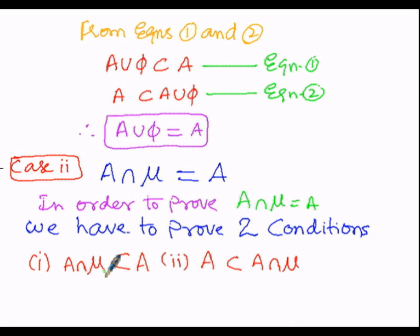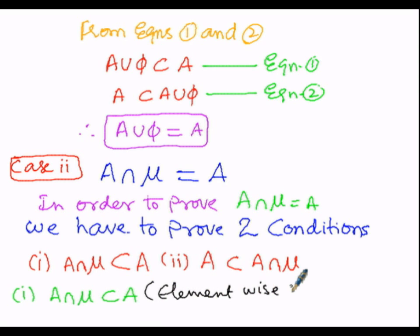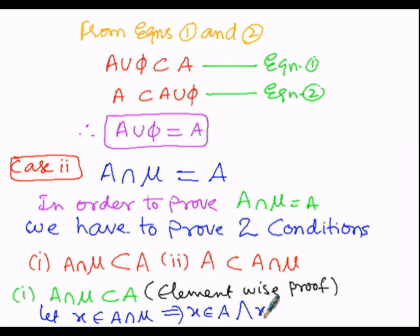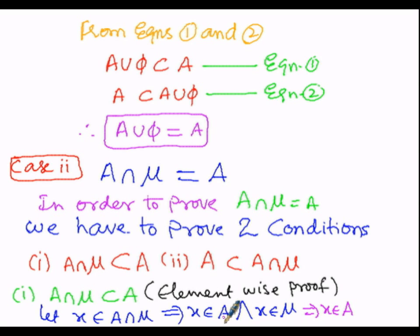For the first case, we prove A intersection μ is a subset of A. We consider an element X which belongs to A intersection μ. This means X belongs to A and X belongs to the universal set μ. Since A is a subset of μ, the common elements under intersection are the elements of A only. Therefore X belongs to A.